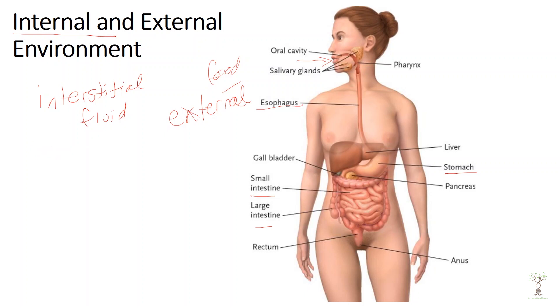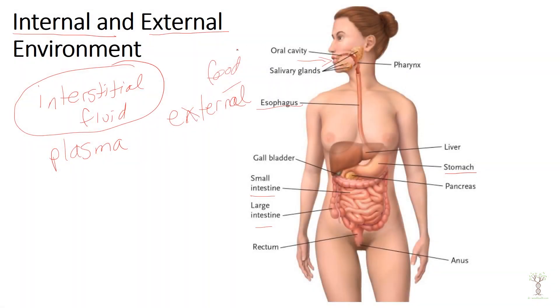The other fluid that surrounds our cells is our blood plasma, and we can regulate what is in the blood. We have mechanisms for making sure that the fluid around our cells contains the right nutrients and ion concentrations, enough oxygen, and the right temperature. The external environment includes anything connected with the outside — our ear canals, our entire digestive tract, our sinuses, and our respiratory tract, including our throat and trachea, which is in front of the esophagus and branches out to the lungs.